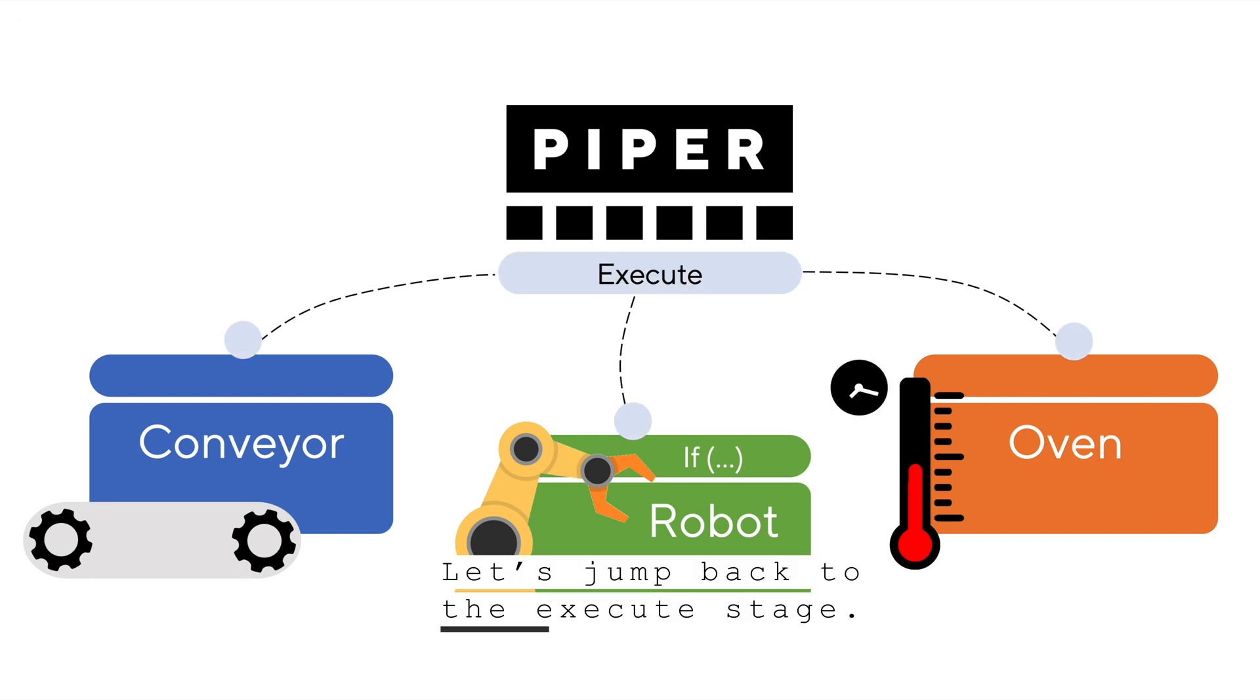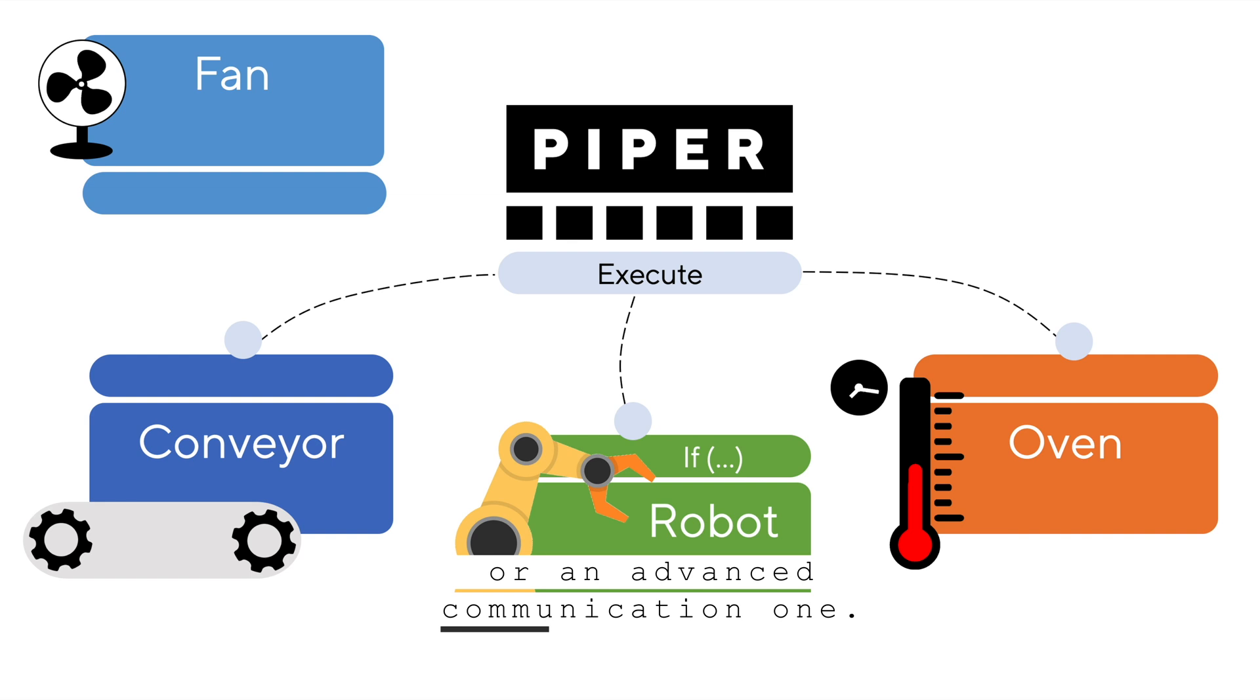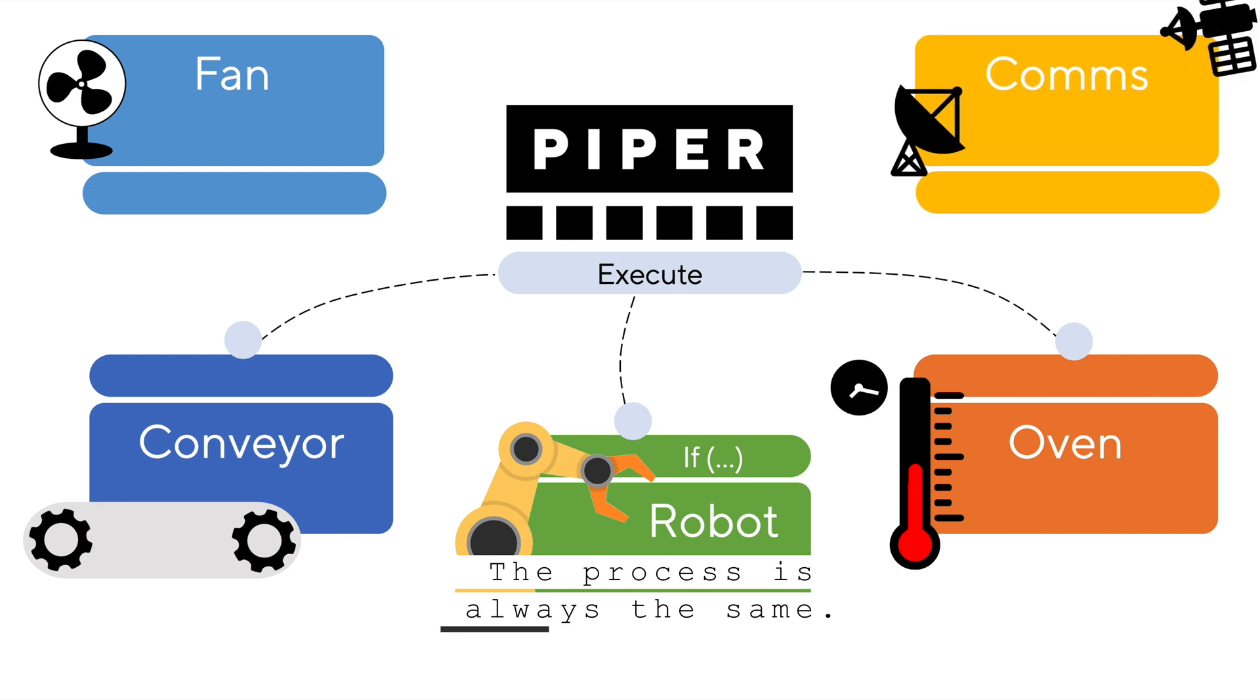Let's jump back to the execute state. Maybe you need to take all this one step further and add a new component to a machine already in the field? Again, no problem. Whether it's a simple fan component or an advanced communication one, the process is always the same. And as a developer, you don't need any knowledge of the other components to do this. Simply add the new component's logic onto your machine, wait for each component to register with Piper, and on the next broadcast they will start chugging along in the specified state.